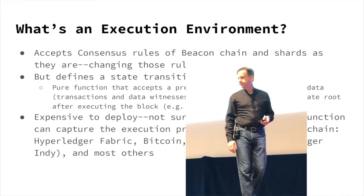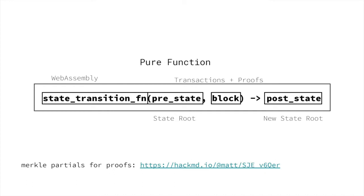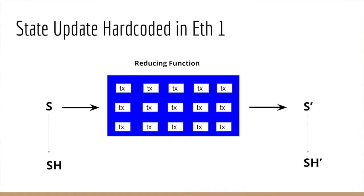For people who want to see it mathematically: the state transition function is so key to the execution environment. It's a pure function, meaning it holds no state. Everything it computes on is given to it as inputs — it has the pre-state root, it has the block (which is the transactions and any proofs of data required for the transactions), and then it gives a post-state hash. Graphically, you take the state root in, and in Ethereum 1, you have a reducing function where you run all the transactions, get all the new states, go through the Merkle Patricia tree, and get the new state root at the top.